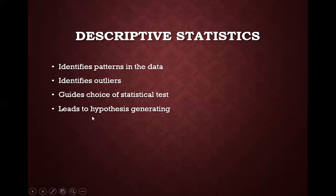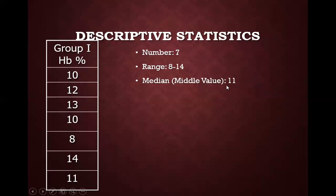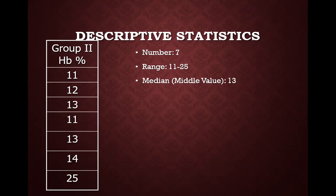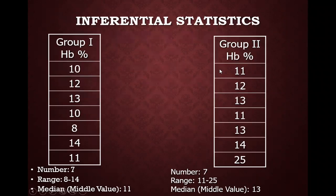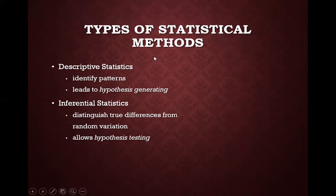Descriptive statistics also leads to hypothesis generation. For example, in group 1 the median was 11, whereas in group 2 the median was 13. So we can hypothesize that the hemoglobin values of group 2 were higher than group 1. This is our hypothesis, which needs to be proved by using further statistical tests. When you do a comparative or correlation analysis of two or more groups, it is known as inferential statistics, because you will draw an inference from the result. Statistical tests are used for proving the hypothesis.